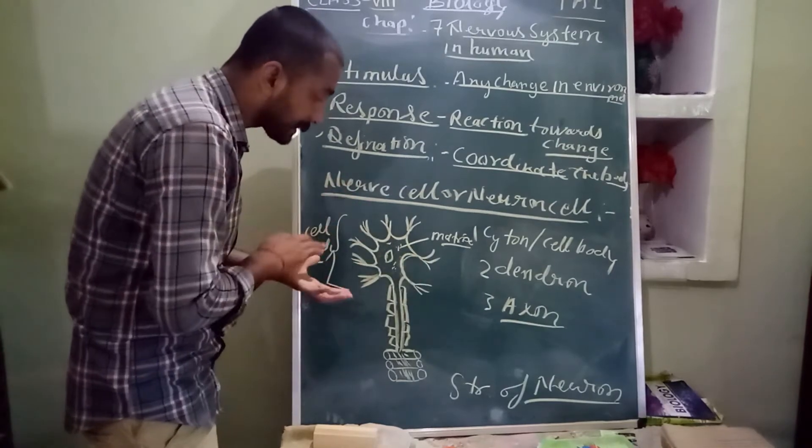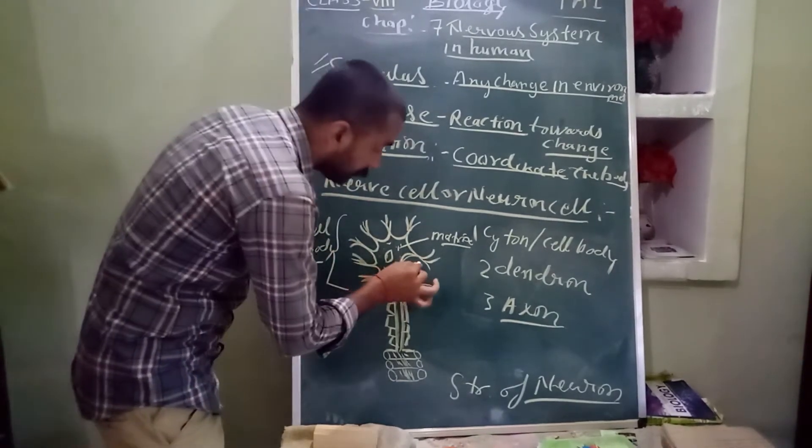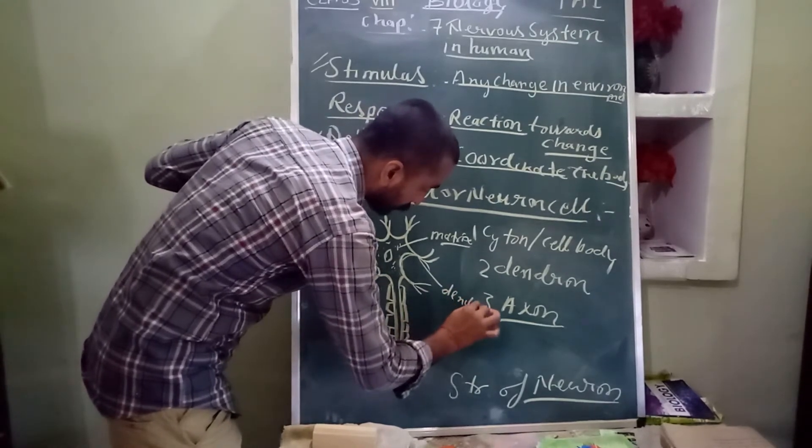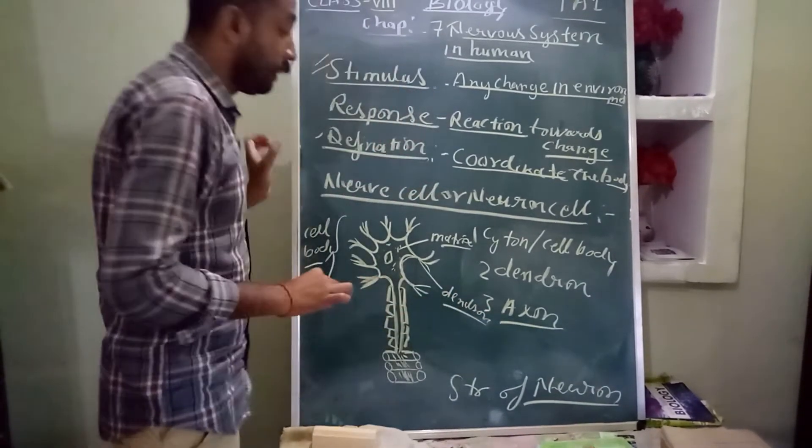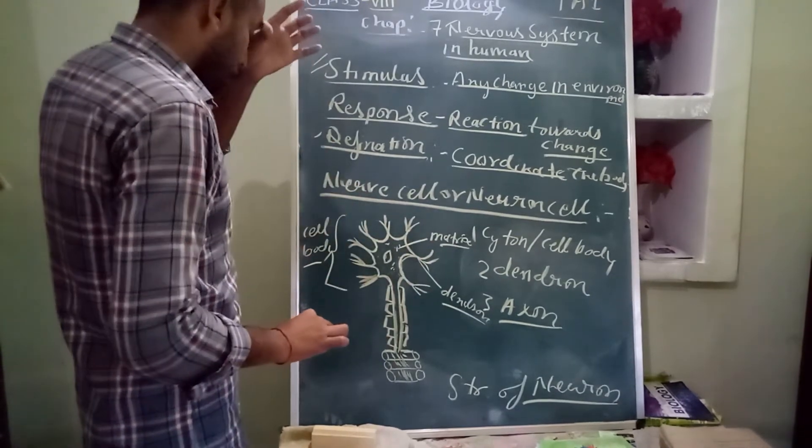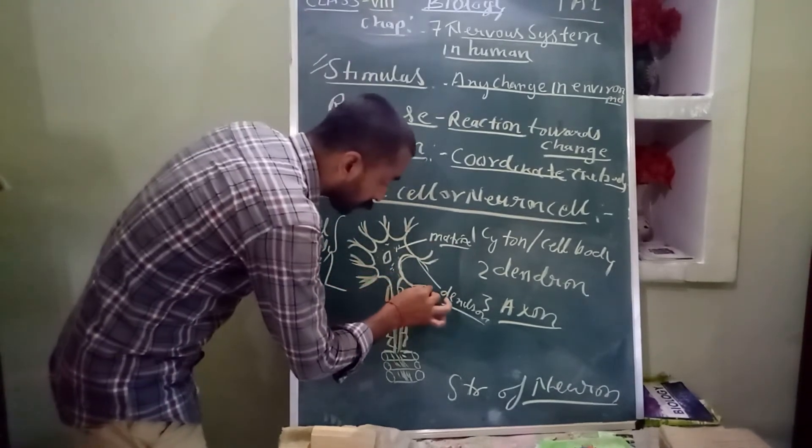Short fibers extend from the cell body. This is called dendron. And further dendrons divide into short fibers, this is called dendrites.